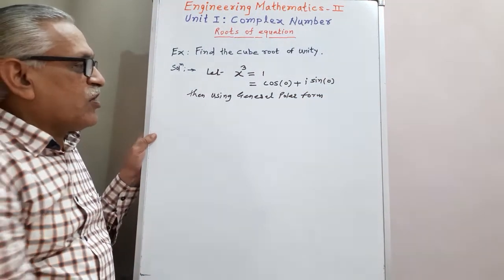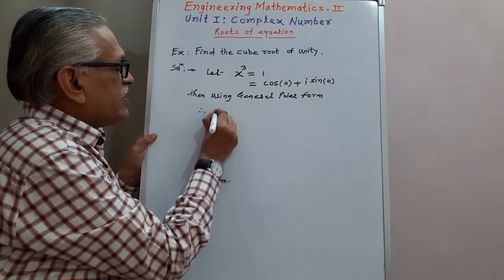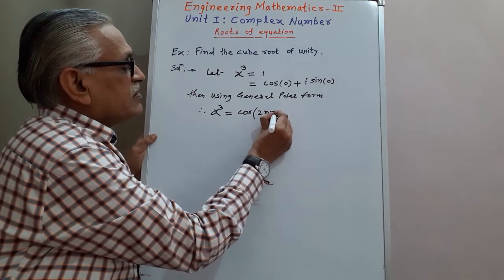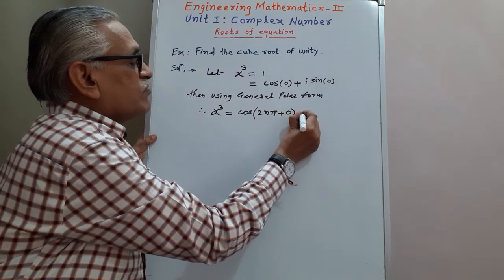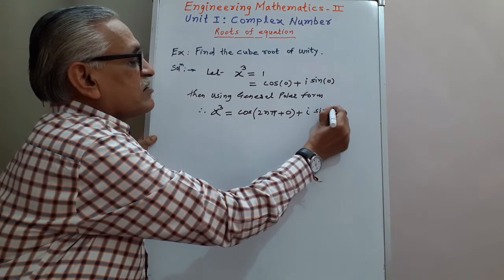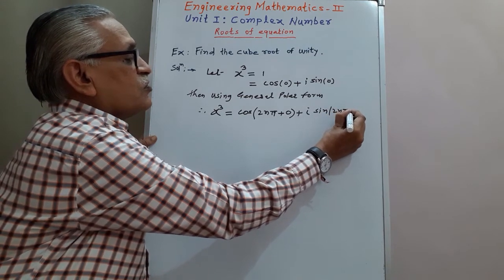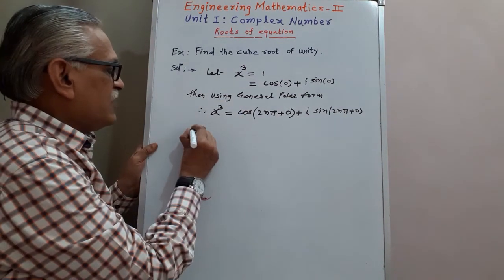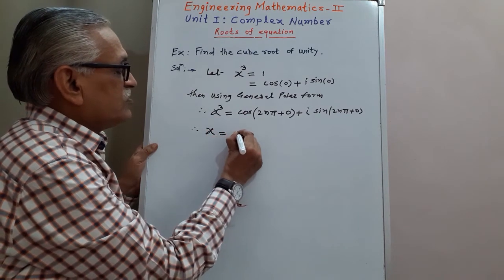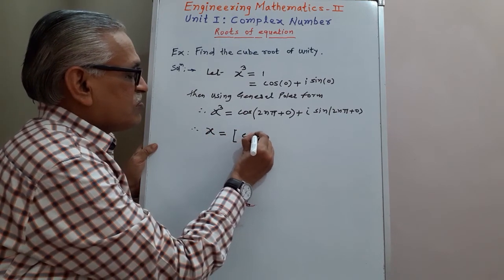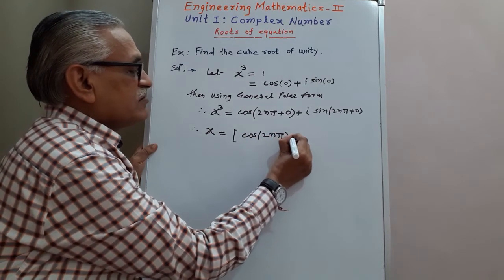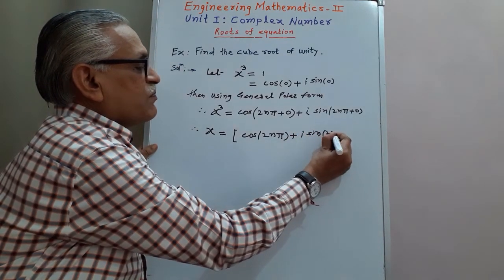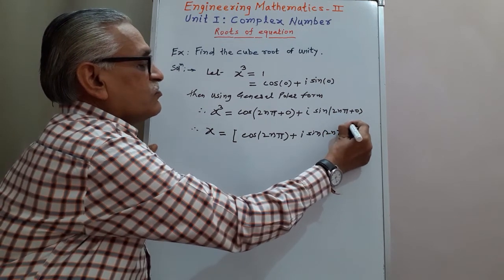Converting it into general polar form, this x cubed we can write as cos(2nπ + 0) plus i sine(2nπ + 0). Then taking the cube root on both sides, therefore we get x is equal to [cos(2nπ) + i sine(2nπ)] to the power 1/3.